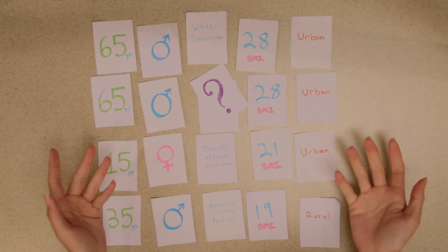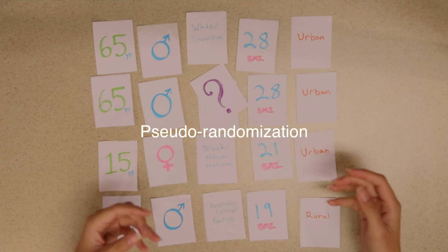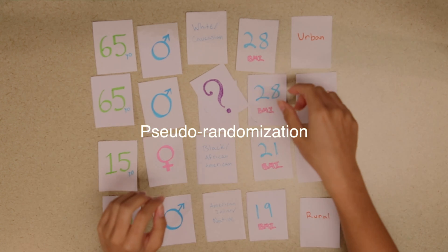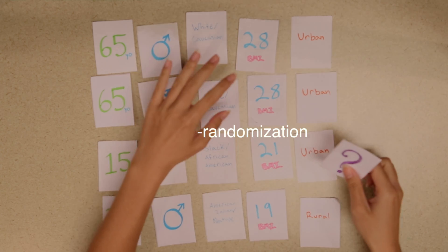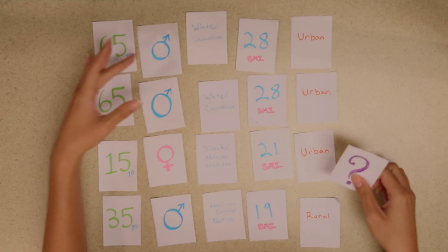This is called pseudorandomization because you're not really randomly assigning treatments but the patients you're looking at both have an equal chance of getting each treatment.